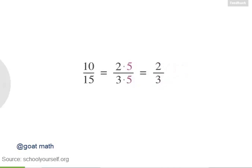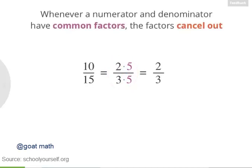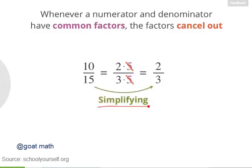So notice that we could have gotten rid of both of these fives over here without changing the value of this fraction. In general, whenever a fraction's numerator and denominator have any common factors, like the five in this case, the factors cancel out. You can cross them out or erase them completely without changing the value of the fraction.